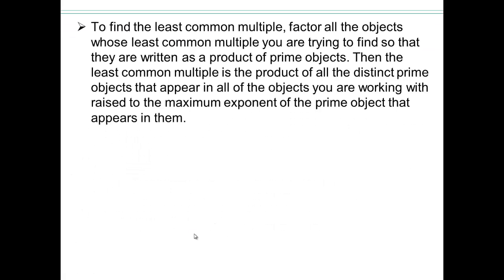To find the least common multiple, we have to factor everything. If you don't factor, then we can't really see the least common multiple easily. So we have to find a way to write numbers and polynomials as a product of primes — that's what we're going to focus on, so that we can look for common multiples or least common multiples.